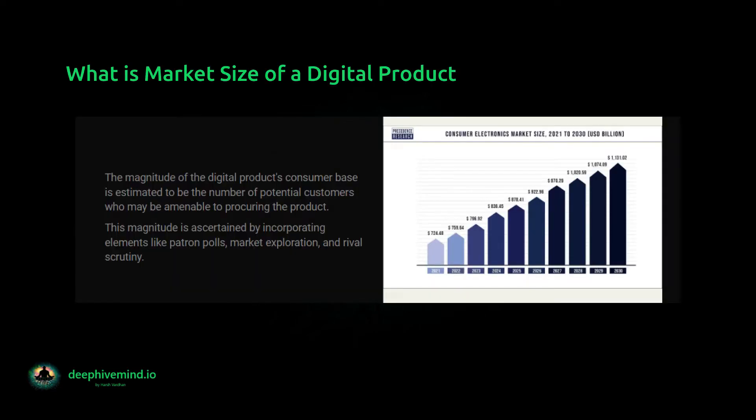What is market size of a digital product? The market size of a digital product refers to the total potential revenue that can be generated by the product in a specific market. This market can be defined by various factors such as geographic region, industry, or target audience. The size of the market can be estimated by analyzing data on the total number of potential customers, the demand for similar products, and the pricing strategy.